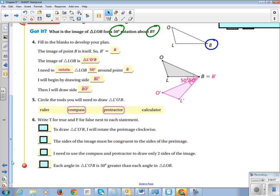So, to draw a triangle L prime, O prime, B, I will rotate the pre-image clockwise. So what did we say is the rotation? Rotation is counterclockwise unless otherwise constructed. So this is false, because we go counterclockwise.